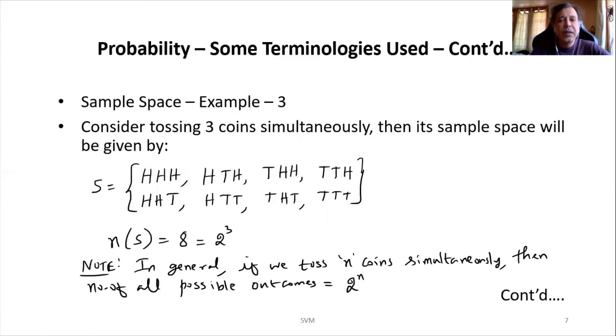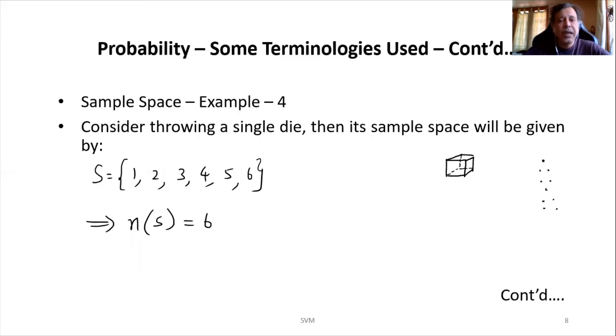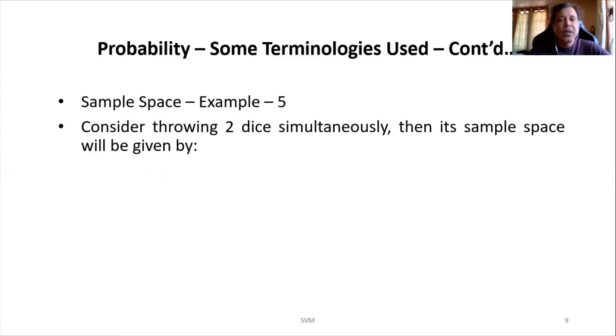Okay, now let us proceed again with our die experiment. So here we understood that there are six outcomes, so we are writing N(S) as 6. So let's move on to the next example, which is about two dice. You may note the plural of die is dice, right?